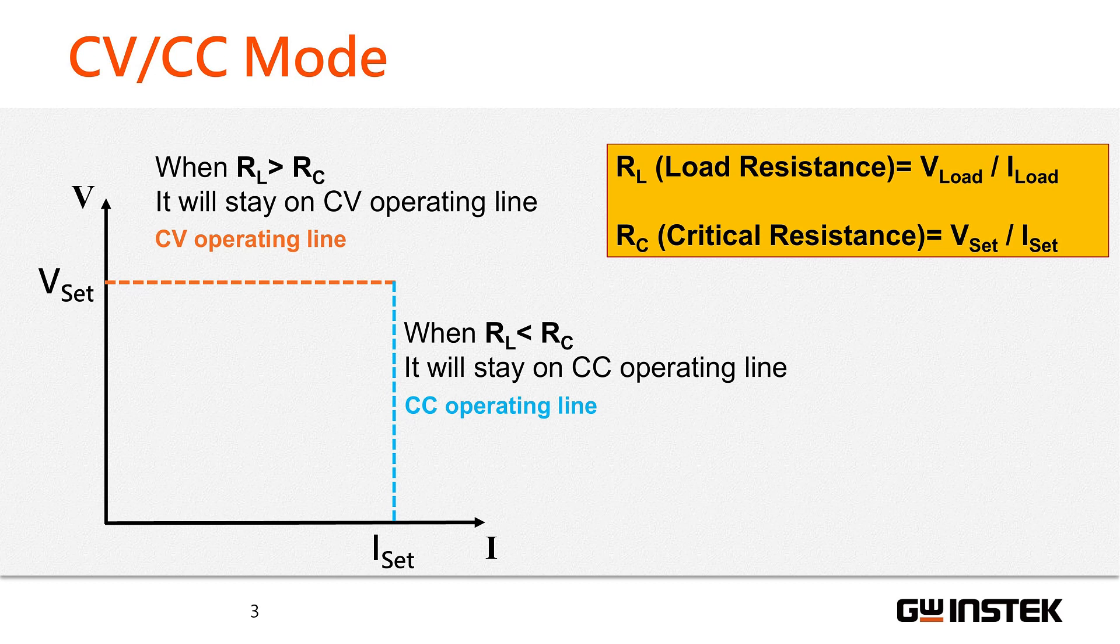The critical resistance is calculated by dividing the set voltage value by the set current value. When the load resistance is greater than the critical resistance, the power supply operates in CV mode to maintain a constant voltage.